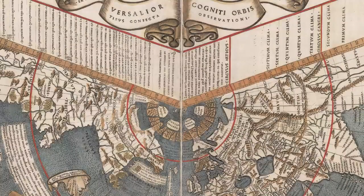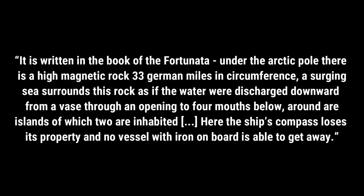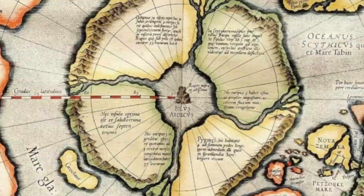'It is all of magnetic stone and is as high as the clouds. It is black and glistening.' In Johan Rusch's 1508 map, the North Pole is represented in a similar manner. The map's legend states: 'It is written in the book of the Fortunata. Under the Arctic Pole, there is a high magnetic rock, 33 German miles in circumference. A surging sea surrounds this rock as if the water were discharged downward from a vase through an opening to four mouths below.' It also notes that ships with iron on board are unable to get away.